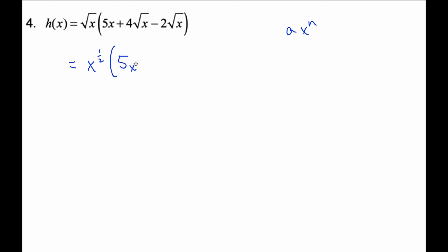So it's 5x to the power of 1 half, plus 4x to the 1 half, minus 2x to the 1 half. And so I'm just going to distribute it, and when I distribute here, I go 5, and I'm going to add the exponents. 1 plus 1 half is 3 halves.